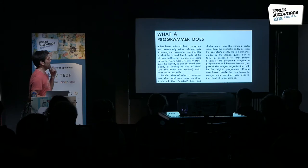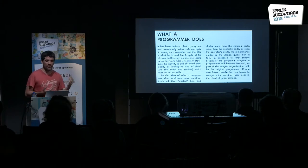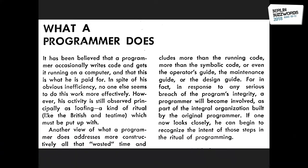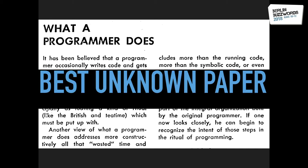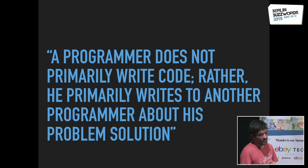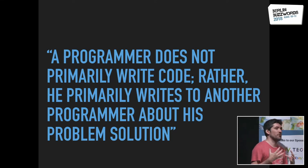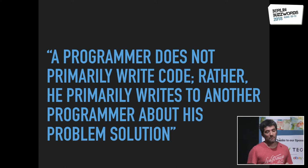I want to start with this paper from the 60s, author unknown, because it was rescued from Donald Knuth's archives and not even Knuth knows who wrote it. I think it's one of the best unknown papers in the industry because it really addresses many things we face today in day-to-day programming. This person says that a programmer does not primarily write code — rather, he primarily writes to another programmer about his problem solution.